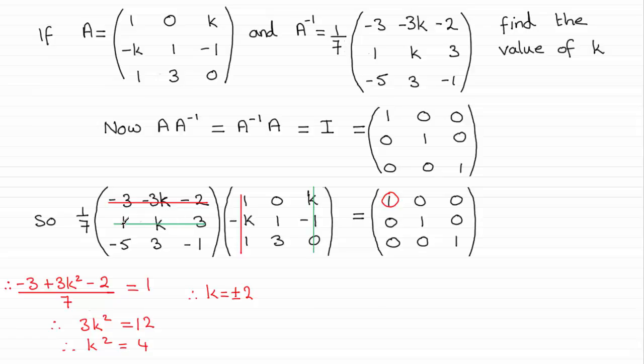If I do that, what do I end up with? Well I've got 1 times k, which is k, and got k times minus 1, which is minus k, and then 3 times 0, well that's 0. It's going to be all over 7, and this will give me this element here, a 0.